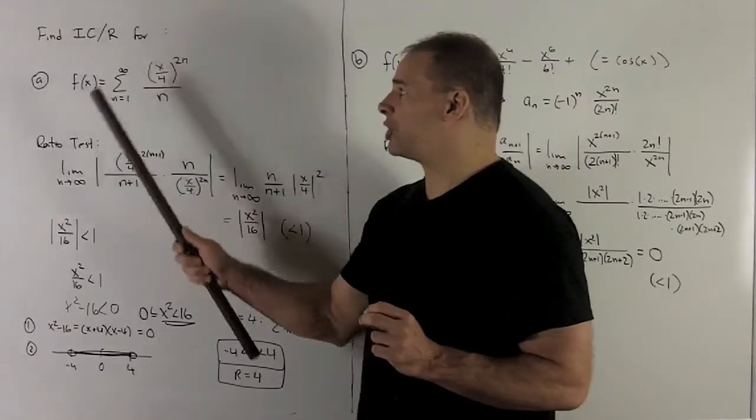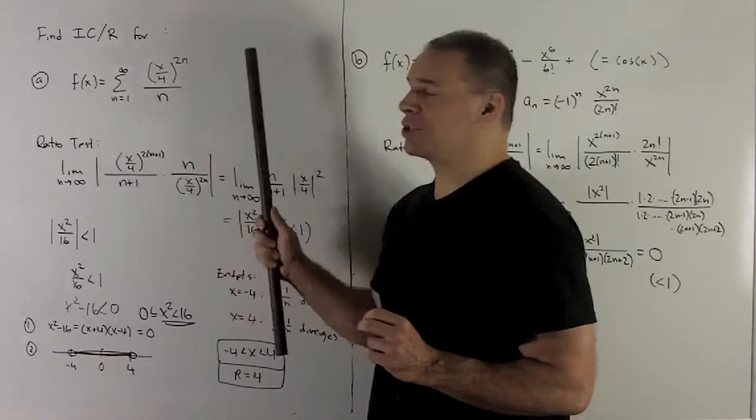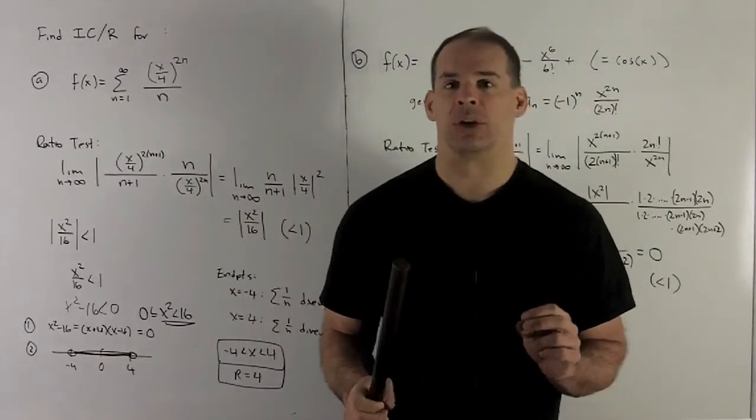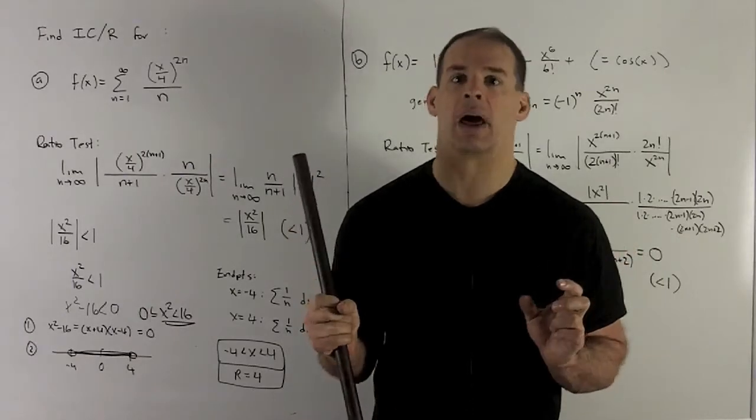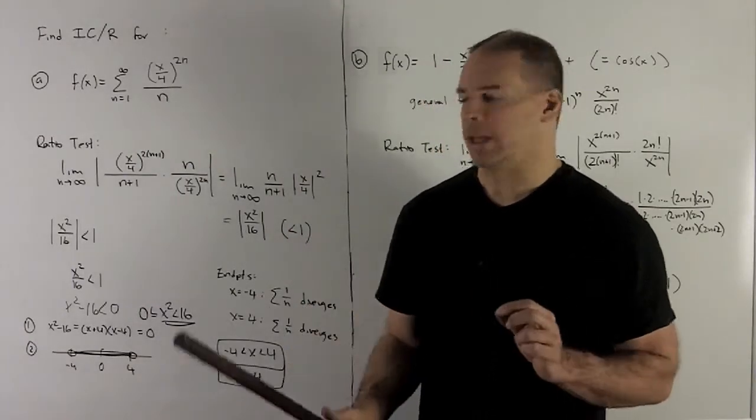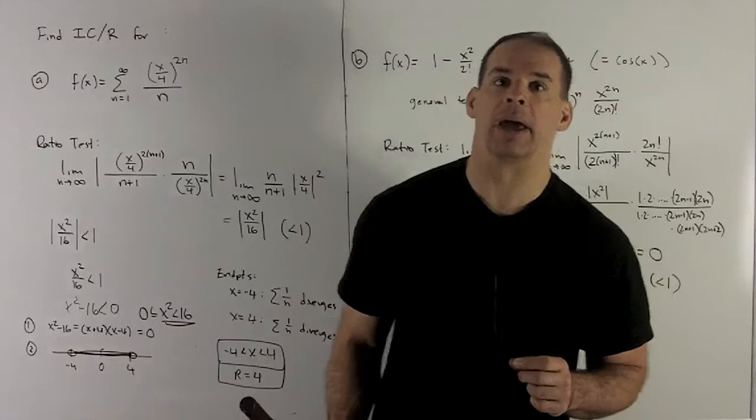Now note in general, when I have squares showing up in my power series, you may not get an interval. You can wind up getting weird things like double intervals. It's going to depend how the thing's set up. So in this case, we're just lucky that an interval came out.